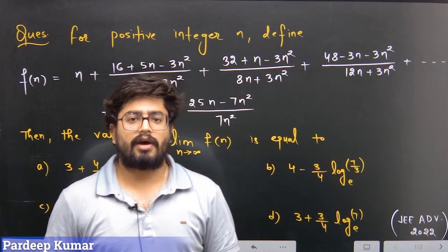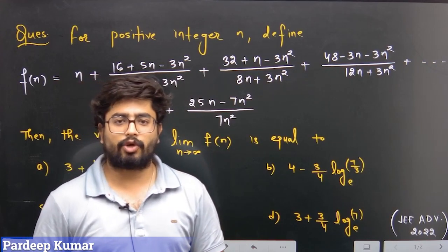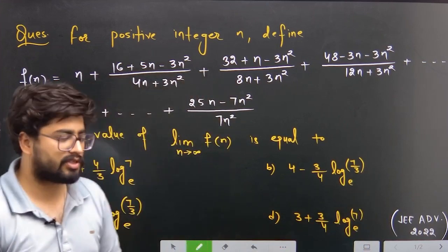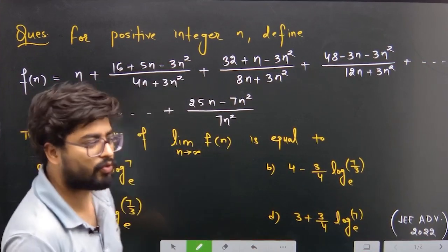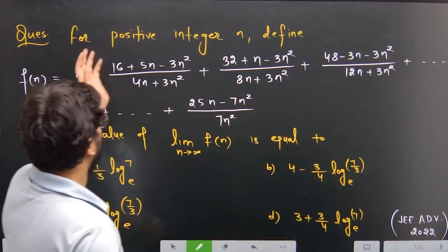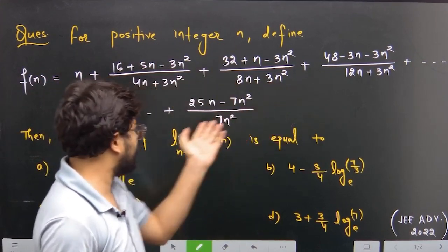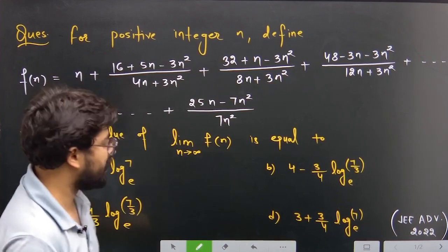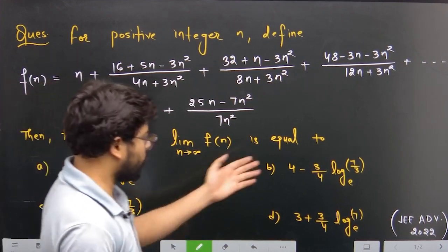Hello students, I'm Pradeep Kumar, mathematics faculty at Toppers Academy. Today we'll discuss a previous year question from JEE Advanced, from the paper of 2022. The question is: for a positive integer n, define f(n) as given, and find the value of limit as n tends to infinity of f(n). You have four options.